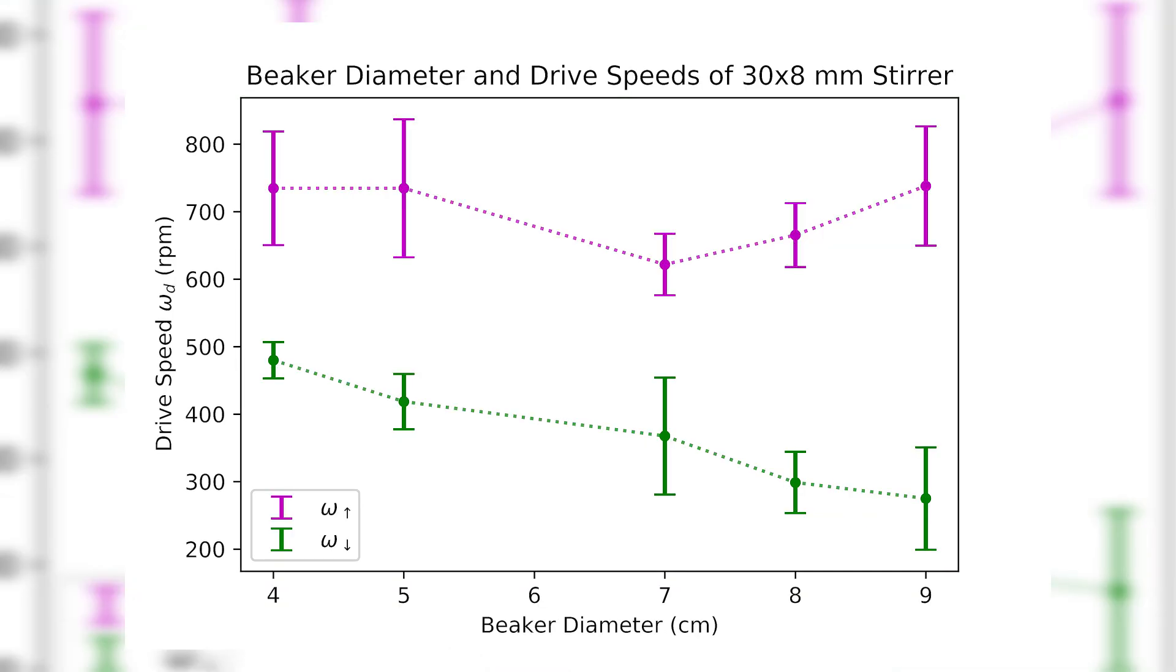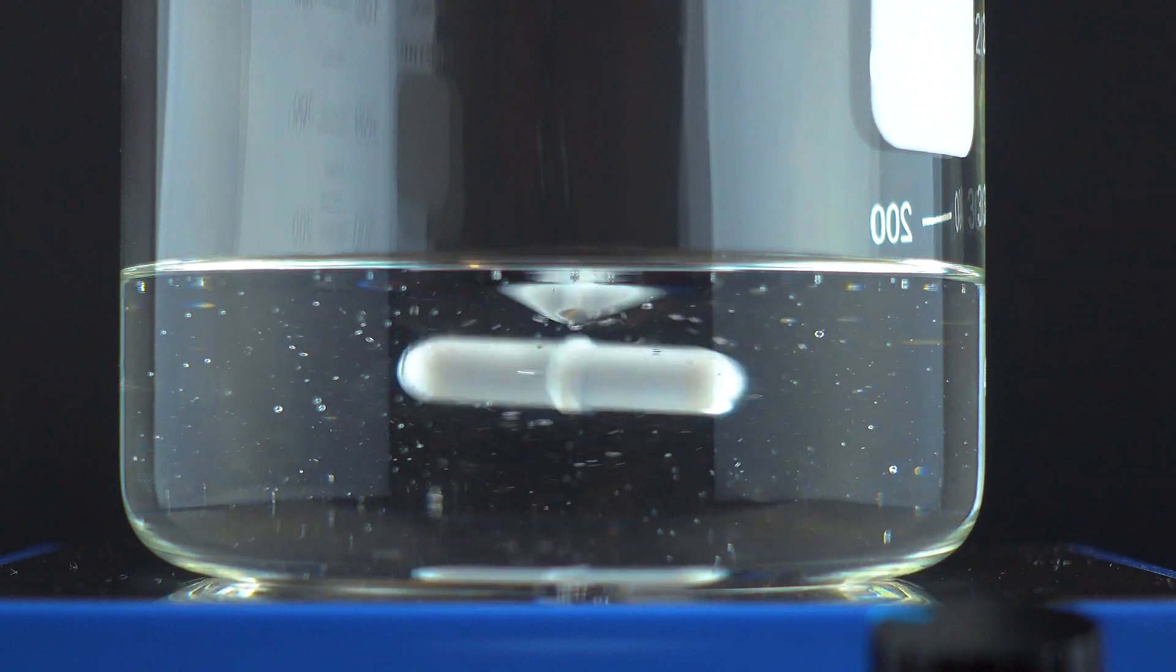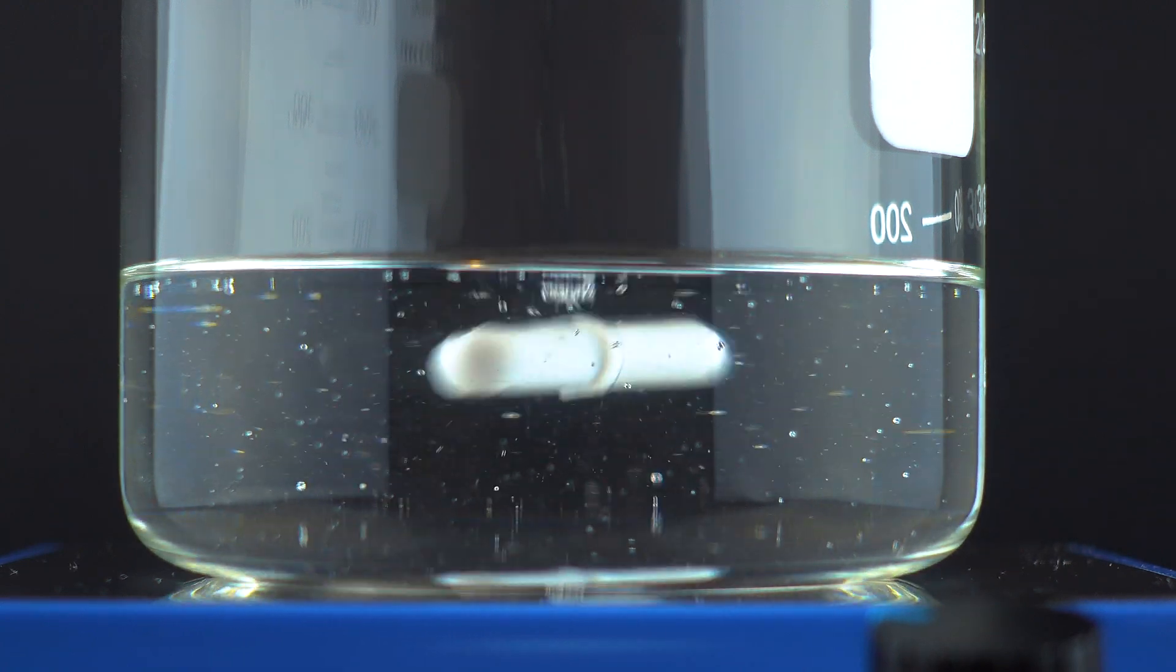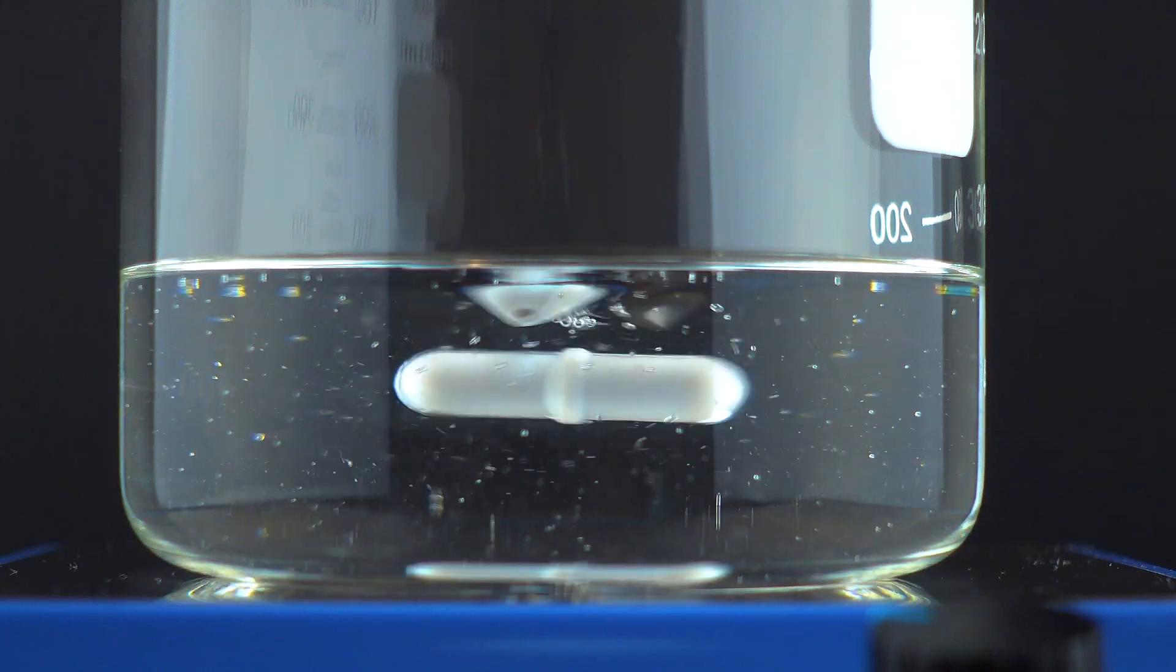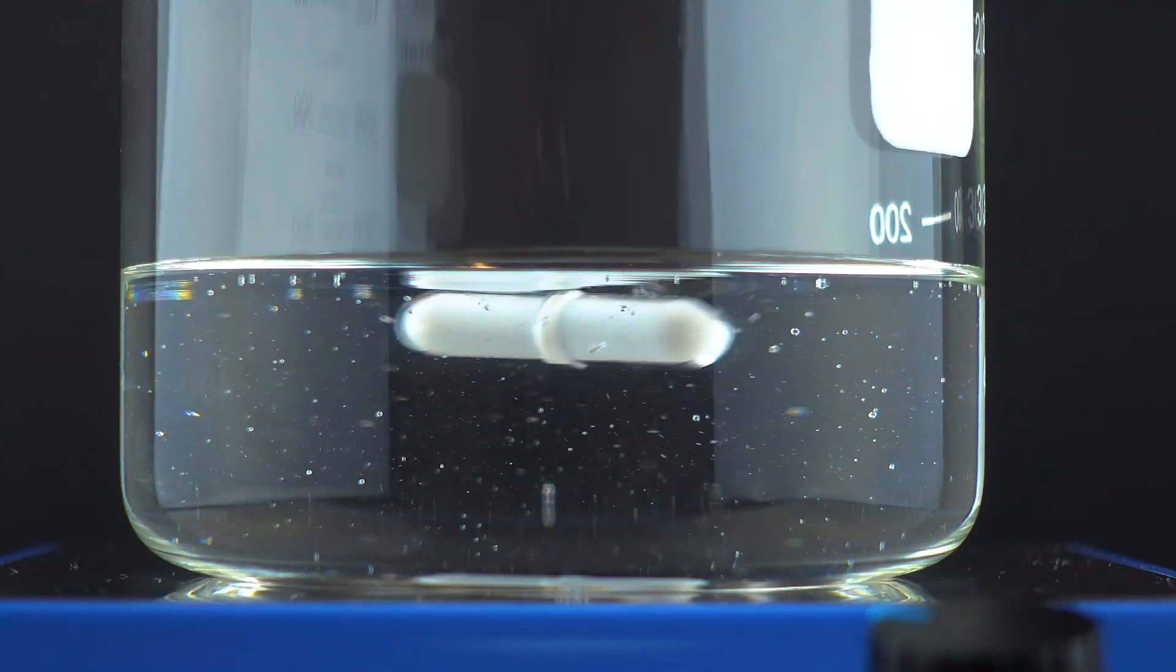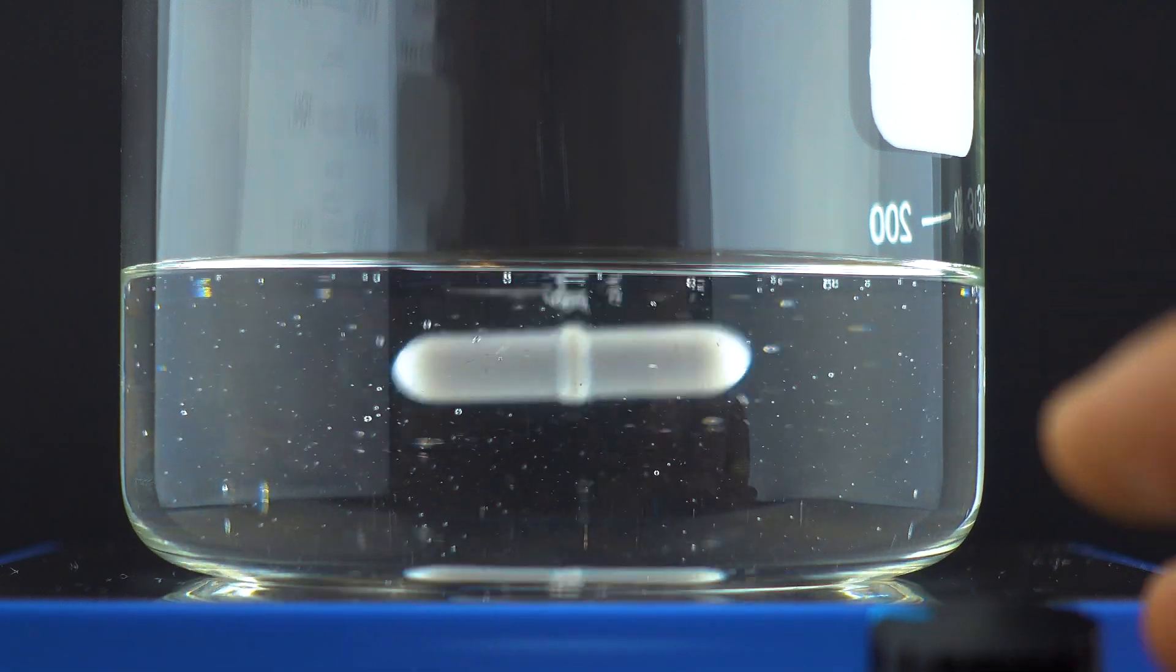I also plotted the beaker diameter against the angular velocities for a 30x8mm stir bar. This indicates that sometimes a smaller beaker can actually make the levitation easier to achieve. As always, this phenomenon has more physics behind it than what I can state in a short video. I hope that this can get you started on your own exploration. I look forward to seeing what your explanations are.